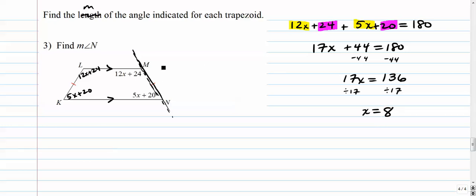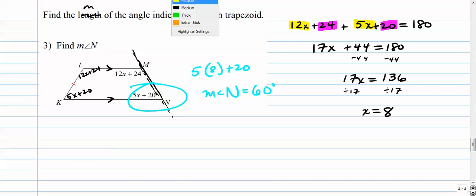And we want to know the measure of angle N. N is right here. So we have 5 times 8 plus 20. So the measure of angle N is 5 times 8 is 40 plus 20 is 60, 60 degrees. And that is our answer.